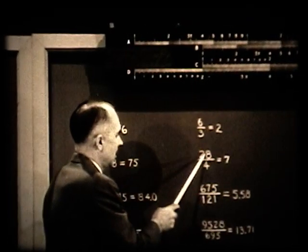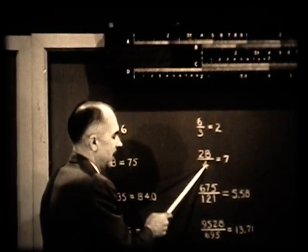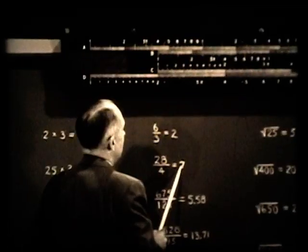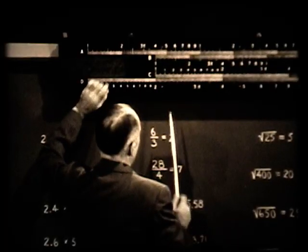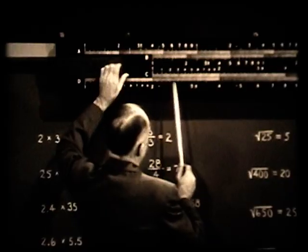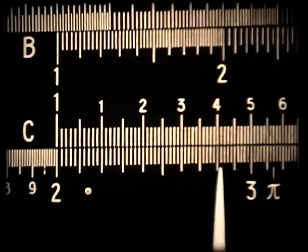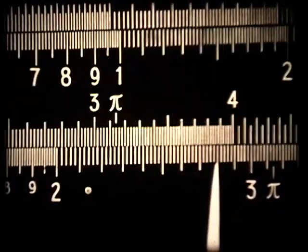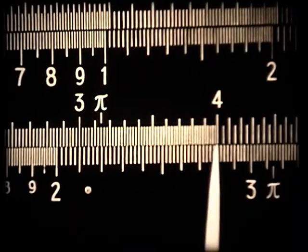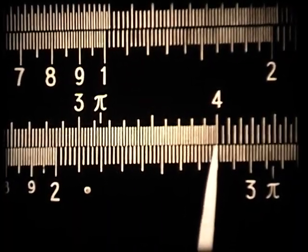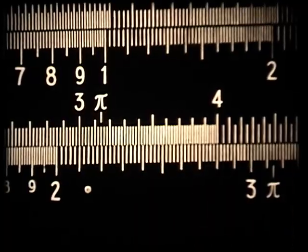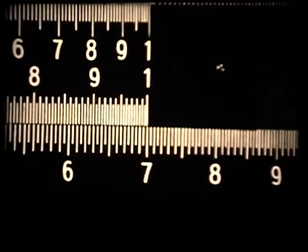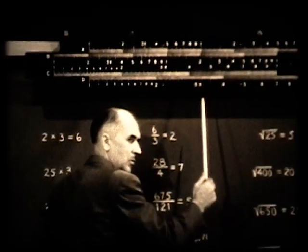Let's take a slightly more complicated number: 28 divided by 4, which mentally gives 7. We go up on the D scale and find 28. We bring 4 directly opposite on the C scale, then look for the index on the rule — the answer is 7. If you'd gone the other direction to the other index, you'd find it off the rule.